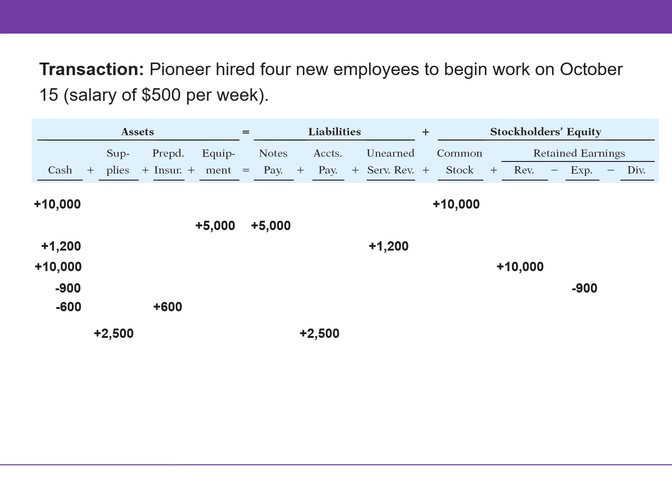Pioneer hired four new employees to begin work on October 15th. A business transaction has not occurred — there is simply an agreement between two parties. When Pioneer pays their employees, that will result in a business transaction.